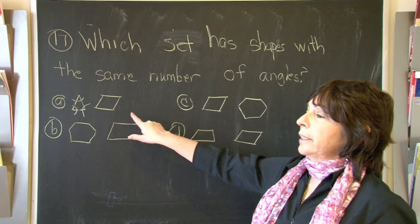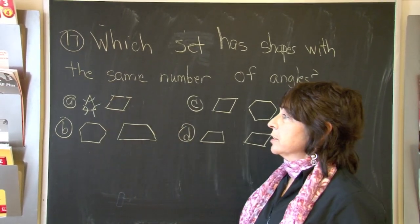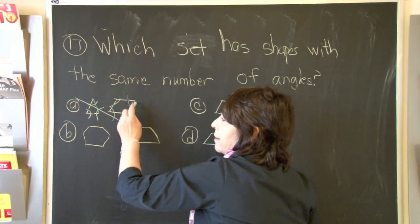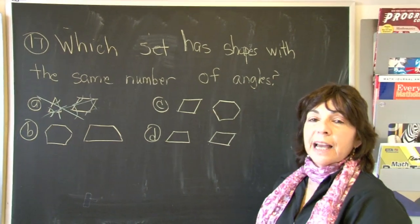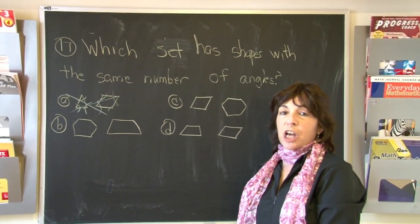So if we look at our parallelogram, it has one, two, three, four sides, and therefore it's going to have four angles. So that cannot be the answer. In order to have the same number of angles, you need to have the same number of sides.